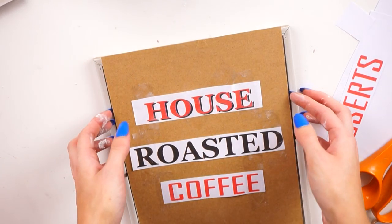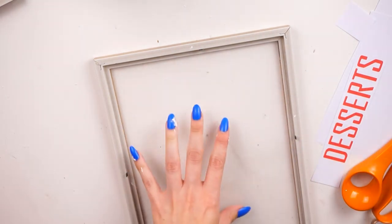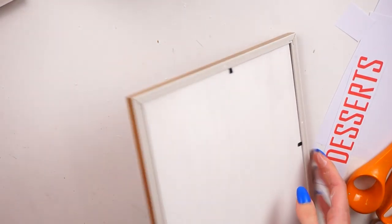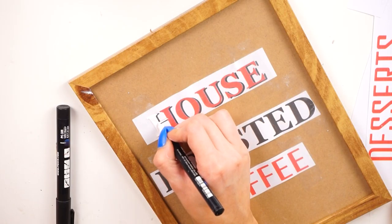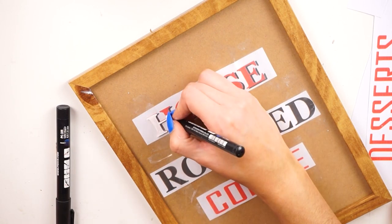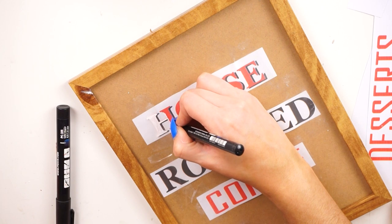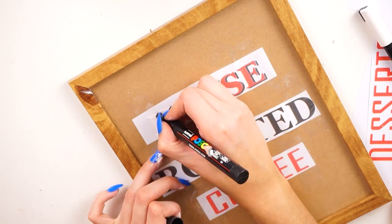So I went ahead and wrote out some words on the word document and then printed them on an A4 piece of paper and then cut them out and stuck them on the backboard of the frame. I did this so I could get them in the exact place that I wanted them and then I put it back into the frame so that I had the backing board with the text on and then the plastic on top.